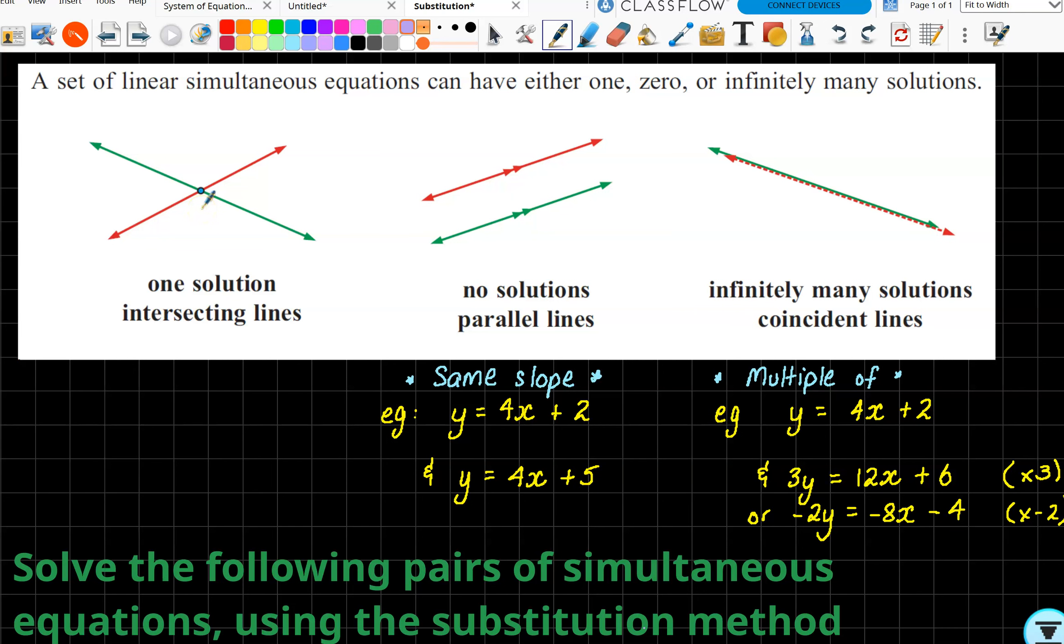The ideal situation will be that they intersect at one unique spot. It could occur that they don't intersect at all and that's because they would have the same slope—the lines are parallel.